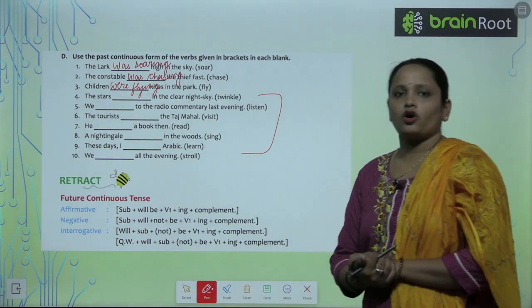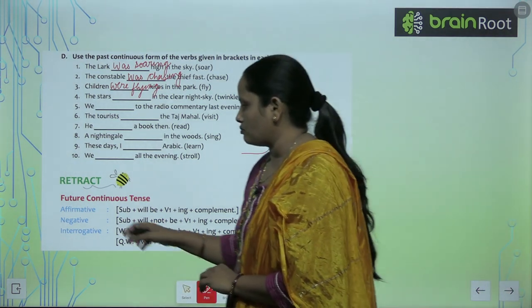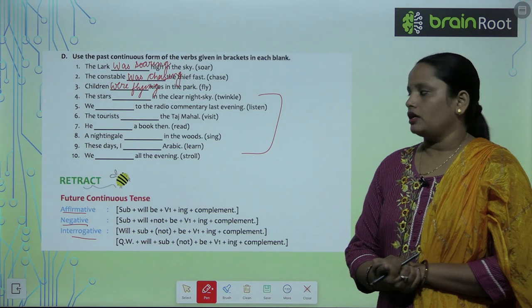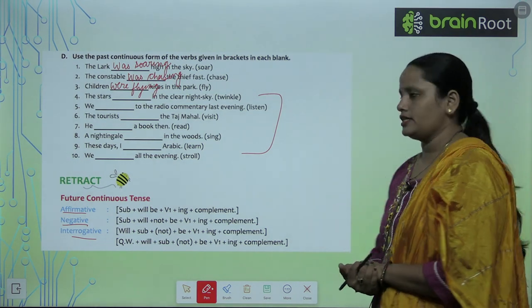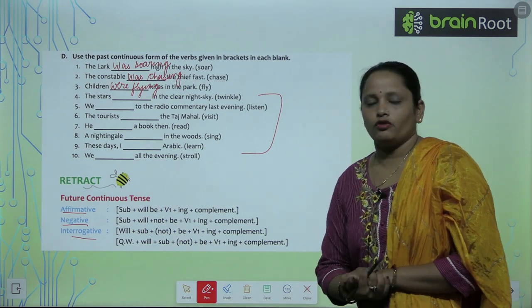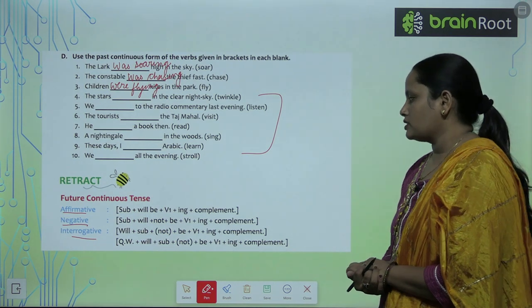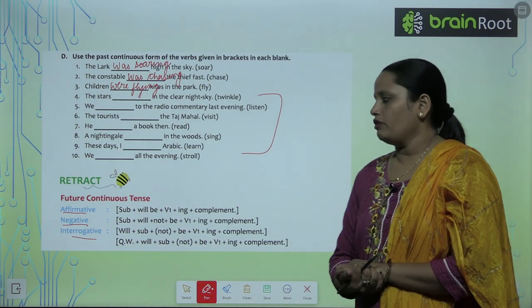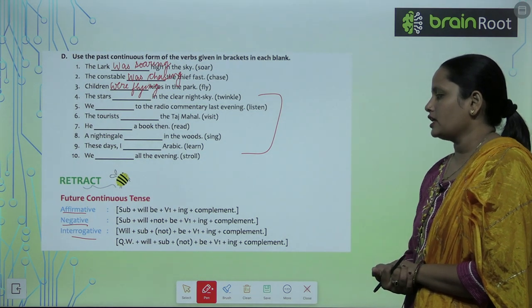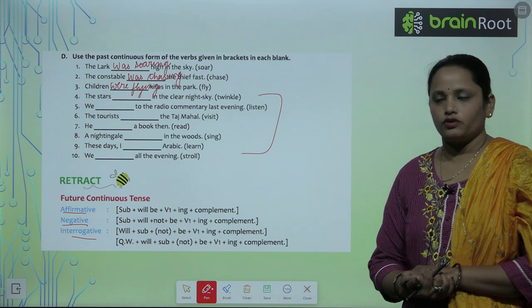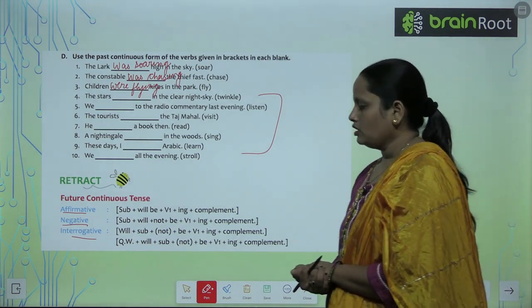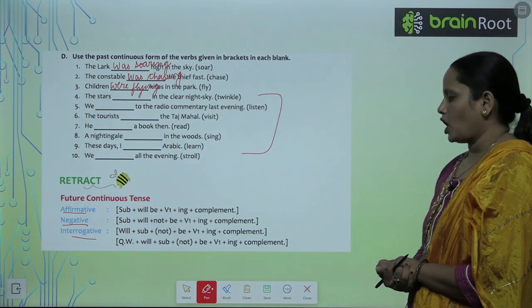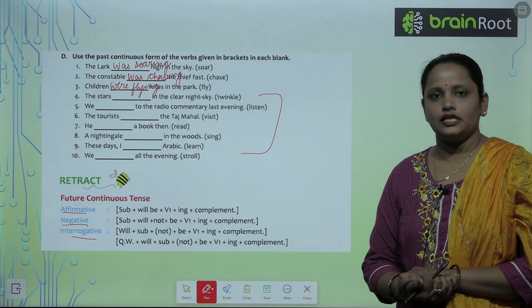Now let's learn Future Continuous Tense, also divided into three parts: Affirmative, Negative, and Interrogative. For affirmative: Subject + will be + verb's first form + ing + complement. For negative: Subject + will not + be + V1 + ing + complement. For interrogative: Will + subject + not + be + verb's first form + ing + complement. And with question word: Question word + will + subject + not + be + V1 + ing + complement.